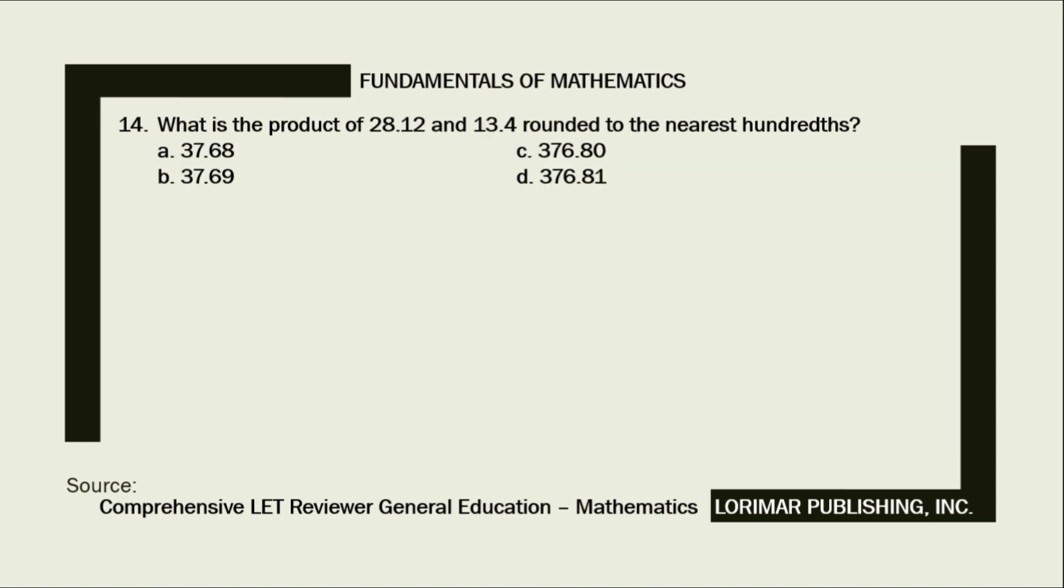Problem number 14. What is the product of 28.12 and 13.4 rounded to the nearest hundredths? A. 37.68. B. 37.69. C. 376.80. D. 376.81.